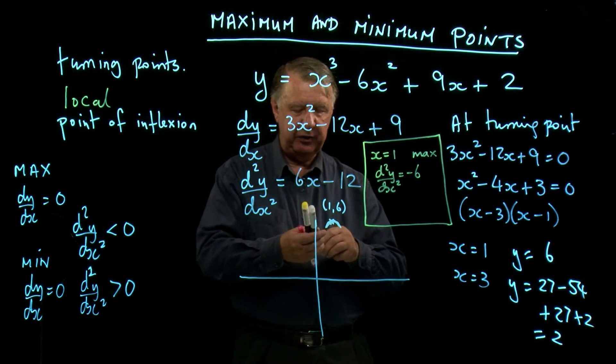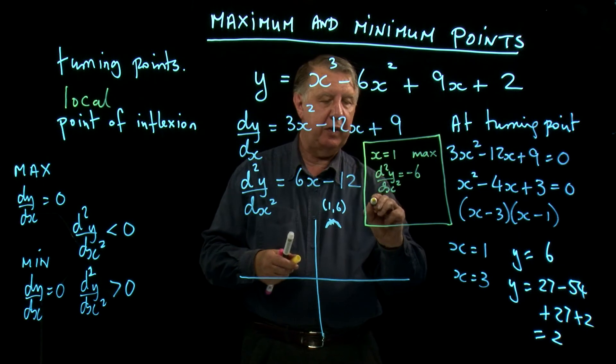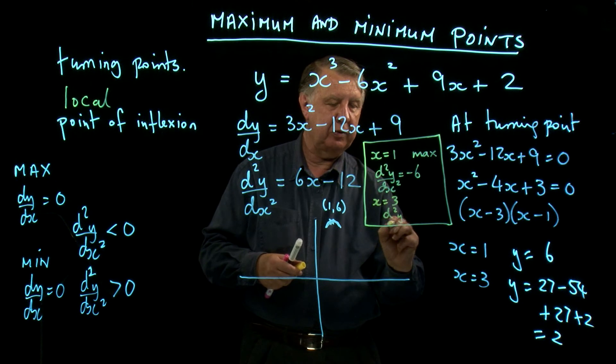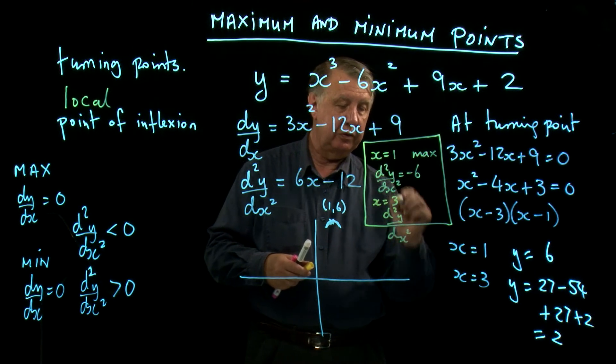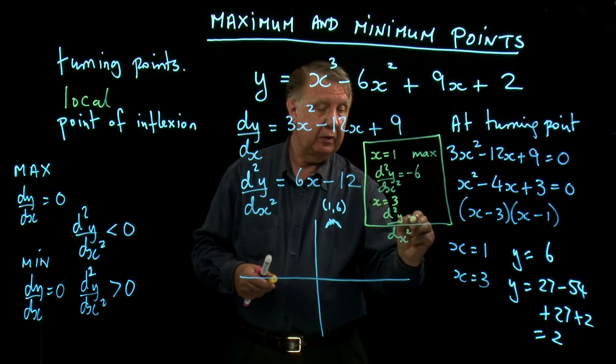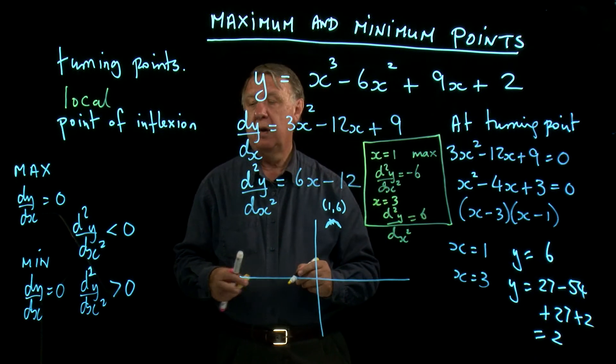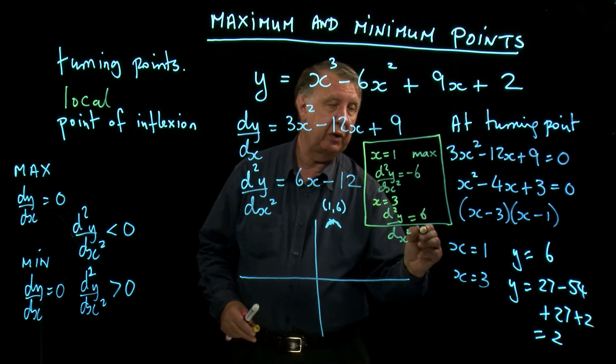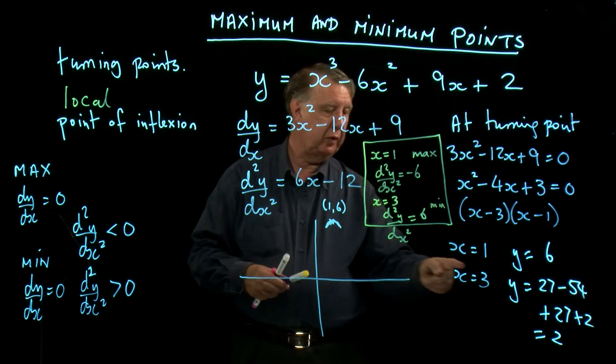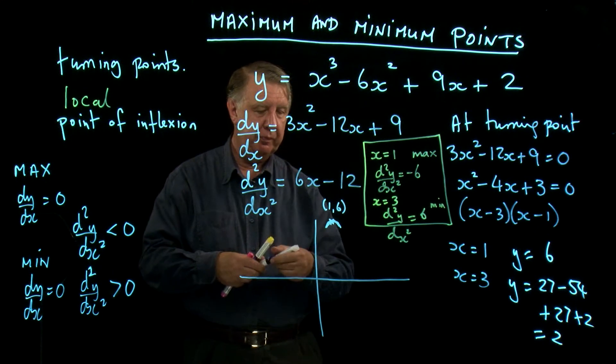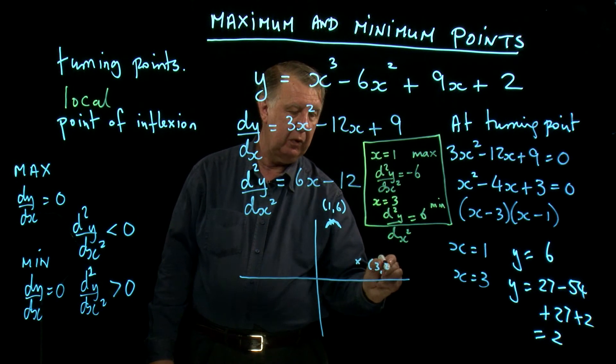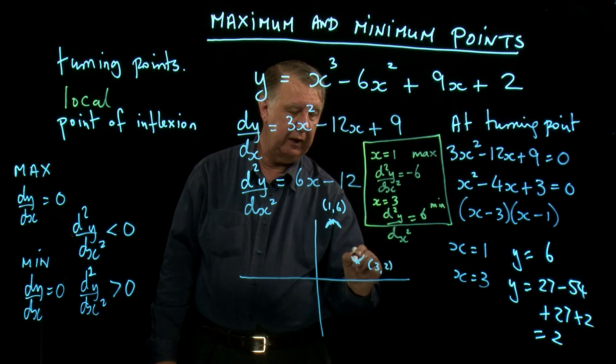The other x value is 3. So if x is 3, d²y/dx², 18 minus 12 is plus 6. Positive, so this one is a minimum. So therefore, (3,2) is a minimum. And that is a minimum.